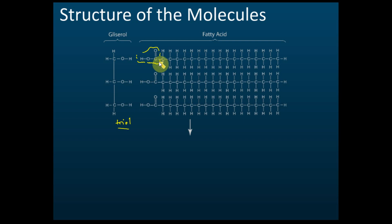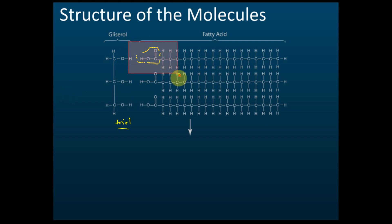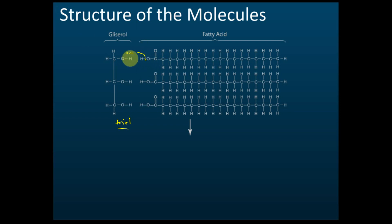Not all carboxylic acids are fatty acids — for example, ethanoic acid and propanoic acid are not fatty acids. Only carboxylic acids with a certain number of carbons — around five to eighteen — are considered fatty acids. From this diagram we can see glycerol and fatty acid, and glycerol can combine with fatty acid.